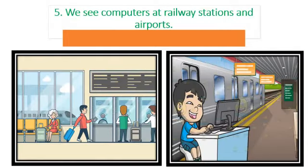We use computers at railway stations and at airports for booking tickets and for reservations. We also use them to check if seats are available, to issue tickets, book seats, and to maintain the flight timings.